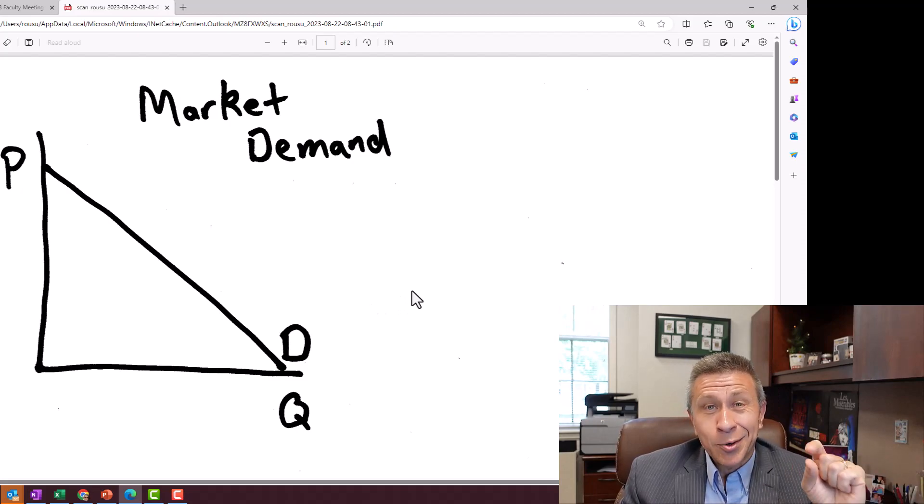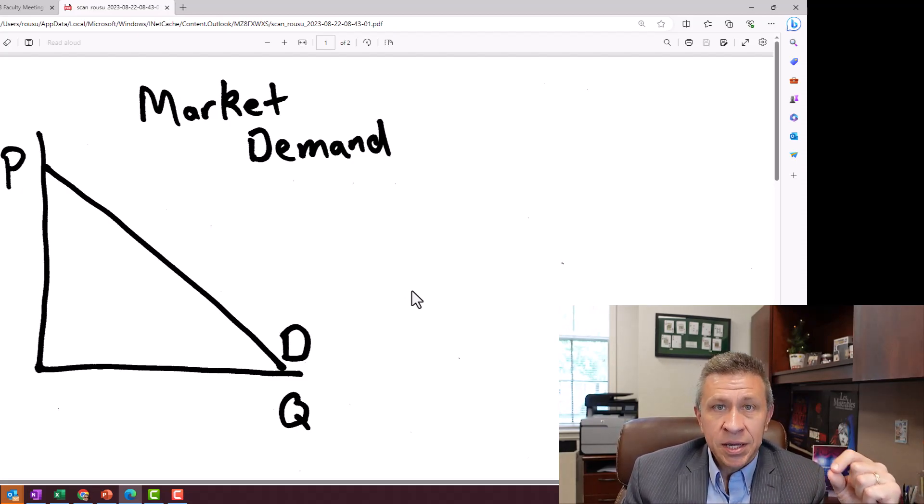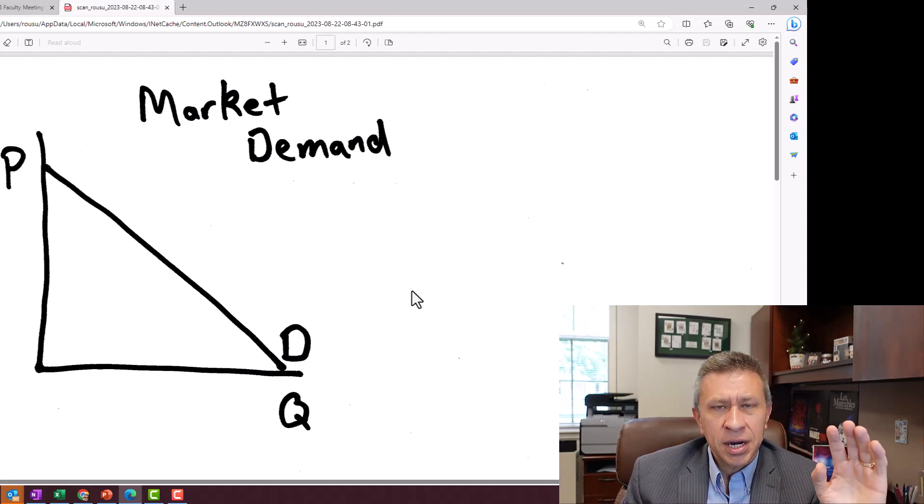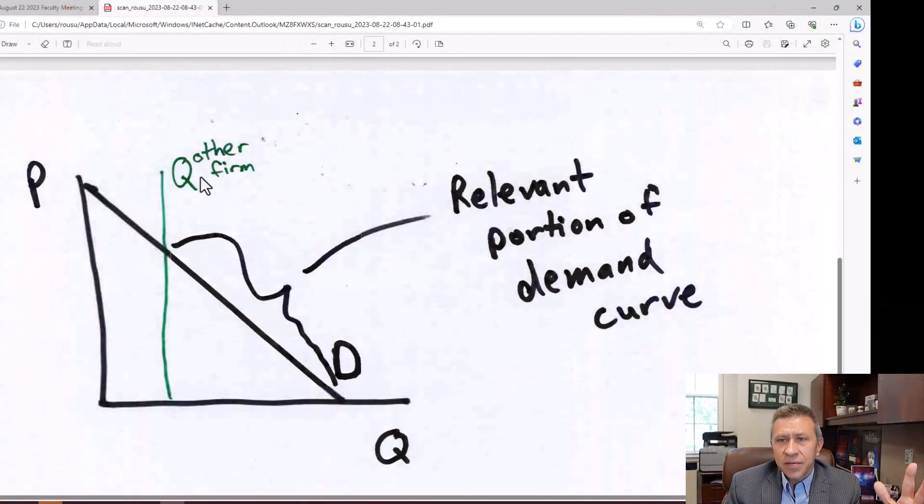But we're not dealing with a monopolist, we're dealing with a duopolist. So remember, the duopolist in a Cournot model makes a conjecture on how much the other firm will produce. That could be thought of as there's some quantity the other firm is going to produce.